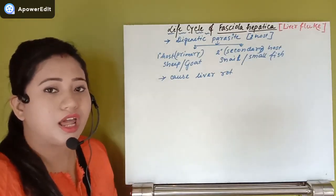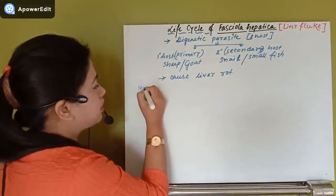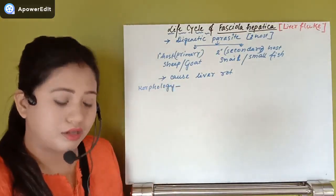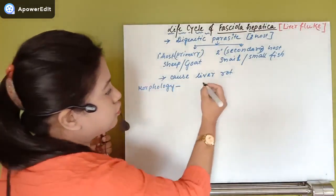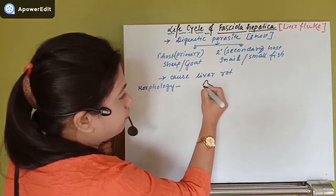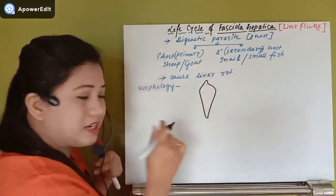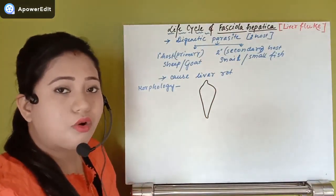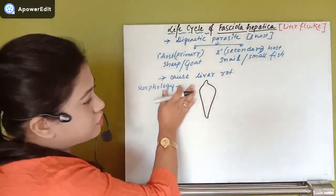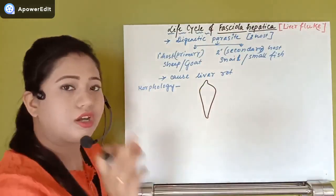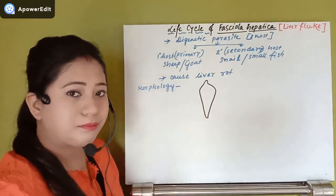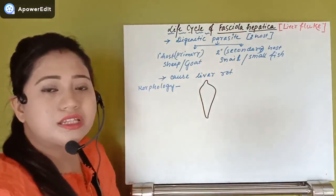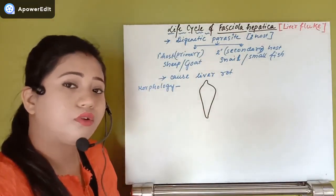Now let's look at the morphology — how this organism looks. It has a flat, small body that is visible to the naked eye. It has a conical shape toward the anterior region where it is flat and broad, and tapers toward the posterior end.